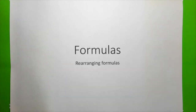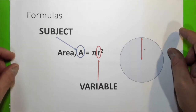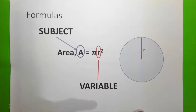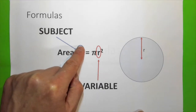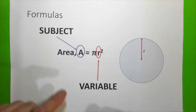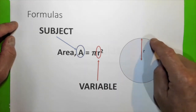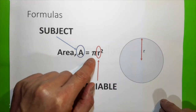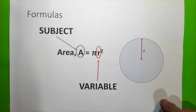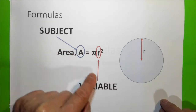In this lesson we are going to look at rearranging formulas. A formula is an equation where you've got an expression on the left and an expression on the right. Take for example the area of a circle, where A equals pi r squared. In this case, A (area) is the subject.